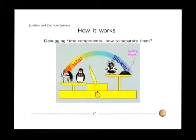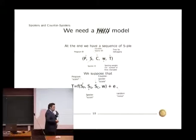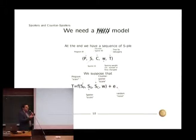And for that we need a model. Basically we say, I know very academic, we say that the debugging time is a function of the score of the programmer, of the score of the spoiler, and score of the counter-spoiler, plus the spoiling weight, plus some random noise, because of course it depends on maybe many other variables that we cannot handle. The idea is that we have a set of equations, one equation for each counter-spoiled program.